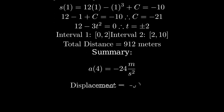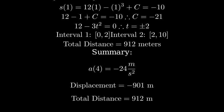So, to summarize, the acceleration at t equals 4 seconds is negative 24 meters per second squared, the displacement from 0 to 10 seconds is negative 901 meters, and the total distance traveled is 912 meters.